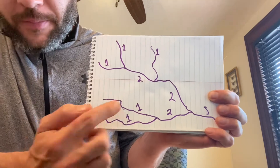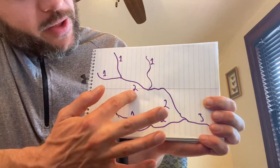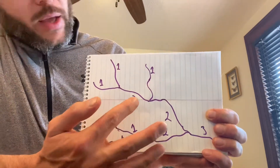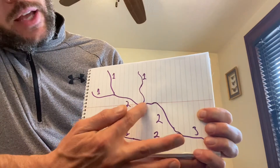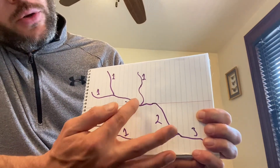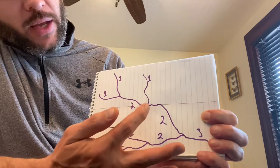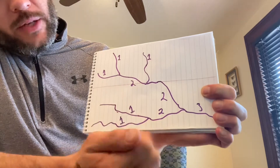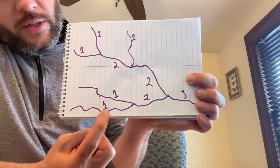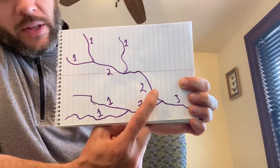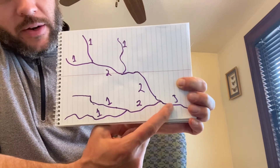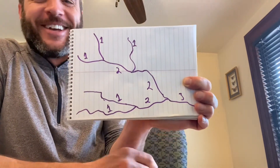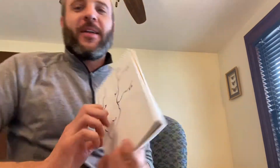This is a terrible diagram, I know, but bear with me. So here's a first order stream, and another first order stream — that goes into the second order. But that doesn't make it a third yet, because you have to have two second order streams come together to make a third order stream. Down here we have two first orders come together to make a second, and then these two second order streams come together to make a third — yes, that is a three, terrible handwriting.